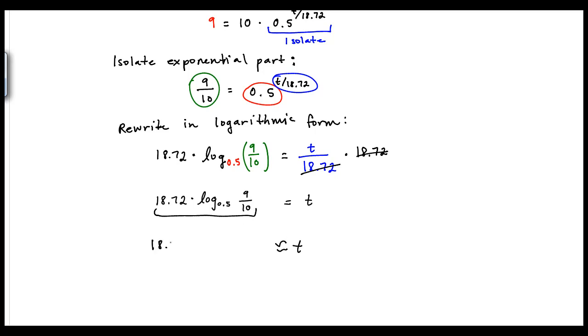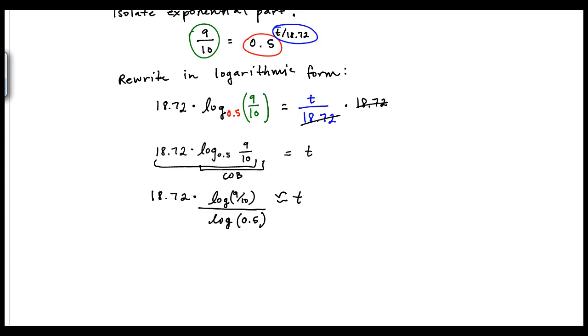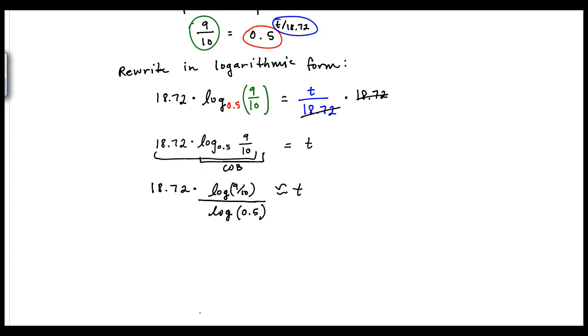So I would have 18.72, and I'm going to go ahead and use the change of base on this part and get times log of 9 tenths all over log of a half. And that should give me the number of years it would take for thorium 227 to reach 9 grams.